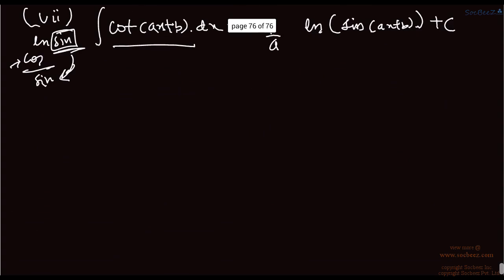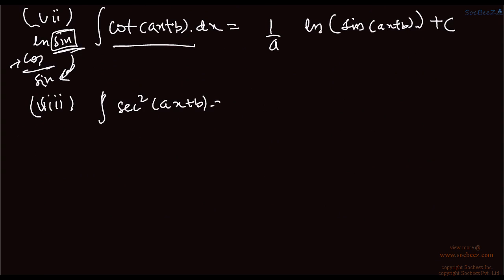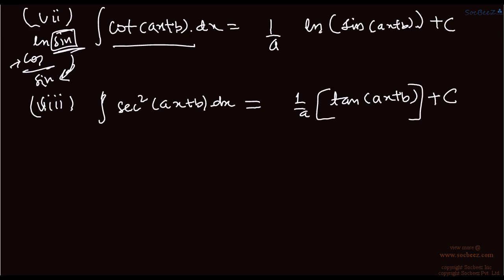The next one: the integral of sec²(ax + b) dx equals 1/a times tan(ax + b) plus c. The differentiation of tan is sec squared, so the integration of sec squared gives tan. This is the reverse relationship between differentiation and integration.